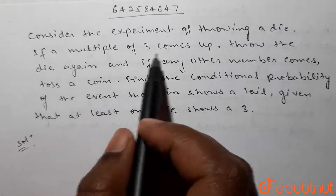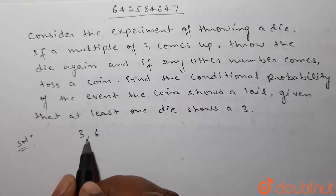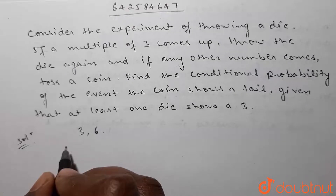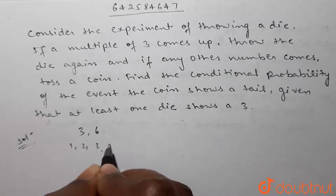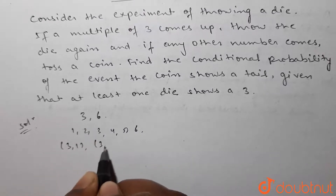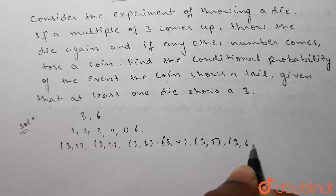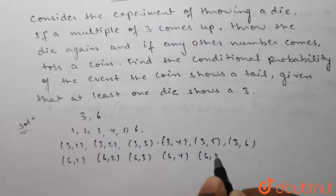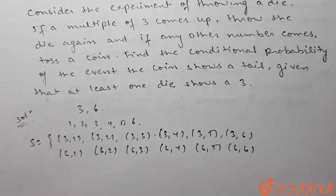In the question it is given that if a multiple of three comes up, throw the die again. Now multiples of three are three and six when a die is thrown. If three or six comes, we throw the die again and the second throw gives one, two, three, four, five, or six. So the pairs will be: (3,1), (3,2), (3,3), (3,4), (3,5), (3,6), and similarly (6,1), (6,2), (6,3), (6,4), (6,5), (6,6).